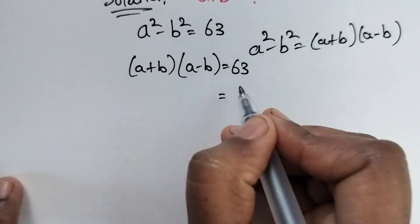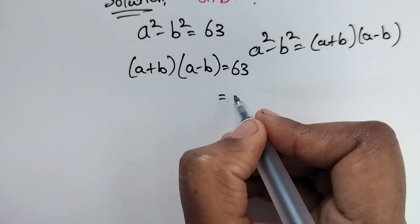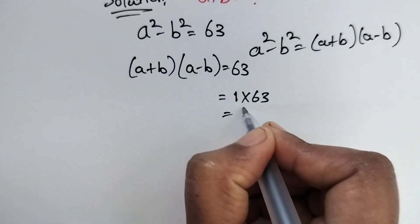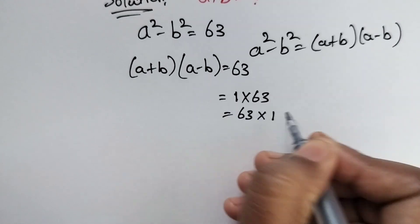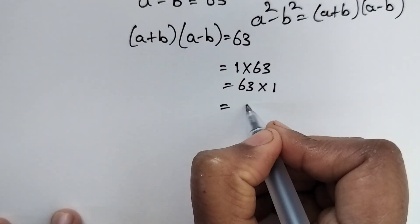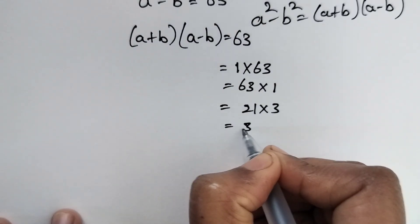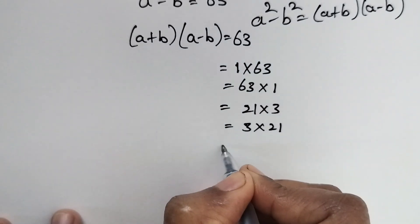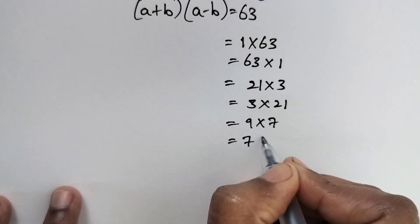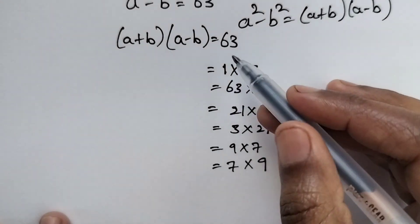Now we need to find the factors of 63. The factors are: 1 times 63, 63 times 1, 21 times 3, 3 times 21, 9 times 7, and 7 times 9. These are all the factor pairs of 63.